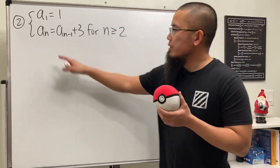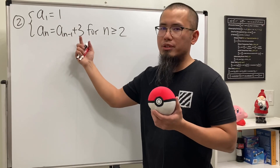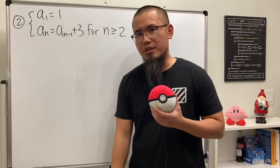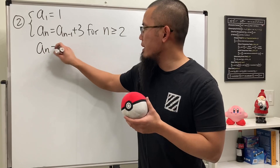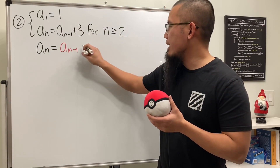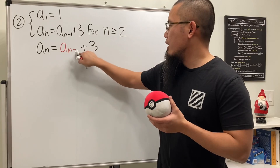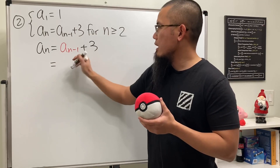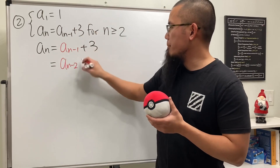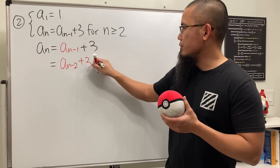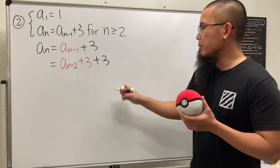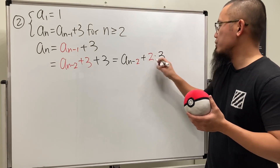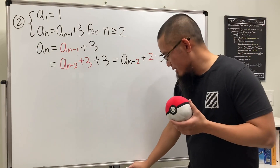Here's the second example. We see that aₙ equals the previous term plus 3, so we're just adding 3 each time — this is arithmetic. Let's use the same strategy. We write aₙ = aₙ₋₁ + 3. For aₙ₋₁, substitute n minus one in to get aₙ₋₂ + 3. Adding those threes gives aₙ₋₂ + 2·3.